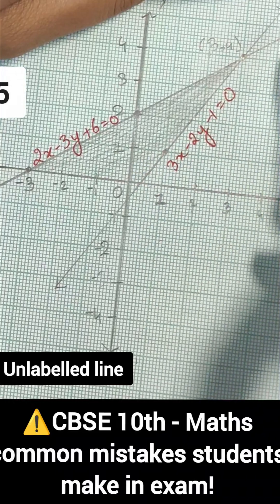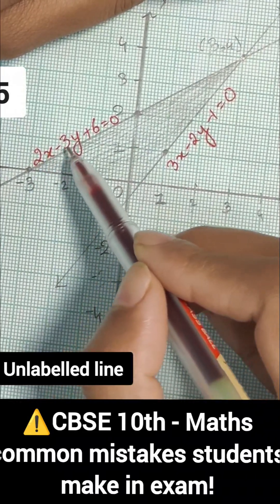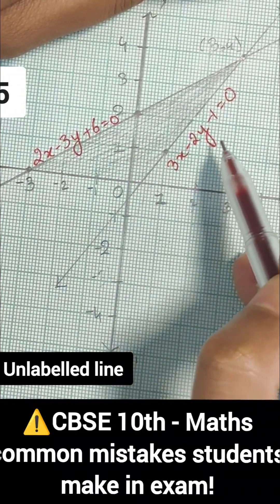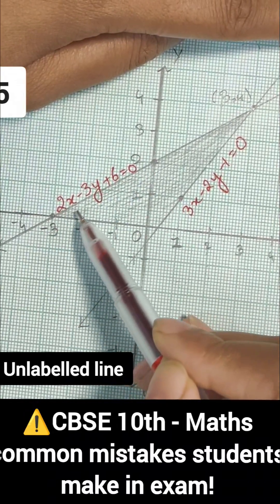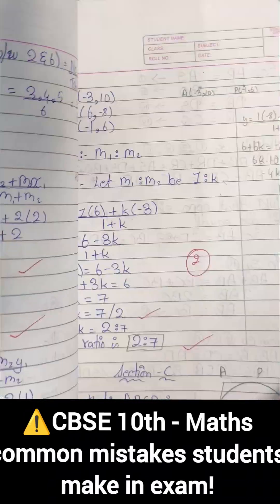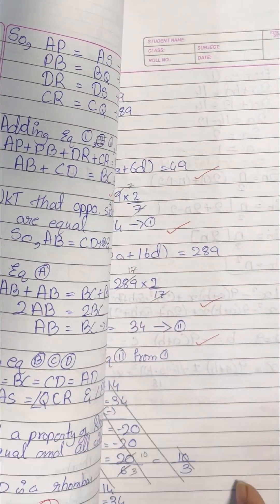Whenever you make some line on graph, make sure that you write the equation of the line on the graph. This is another very common mistake that students do. They forget to write the equation on the line. I will come up with more such tips in our next video.